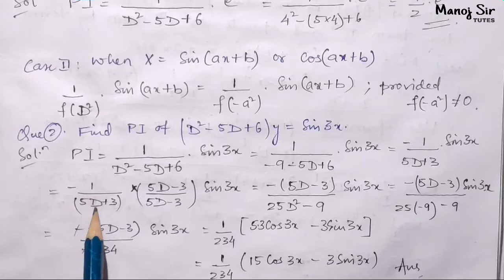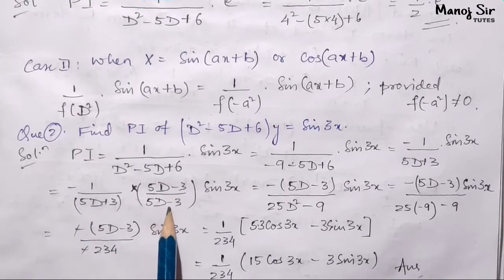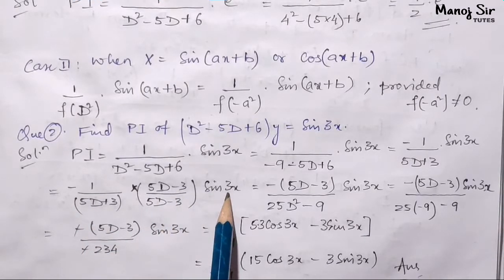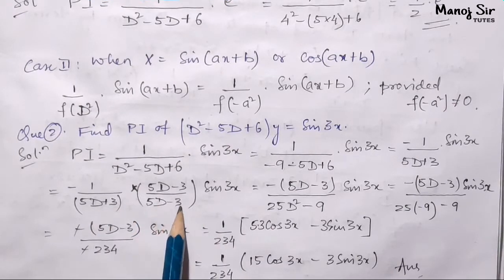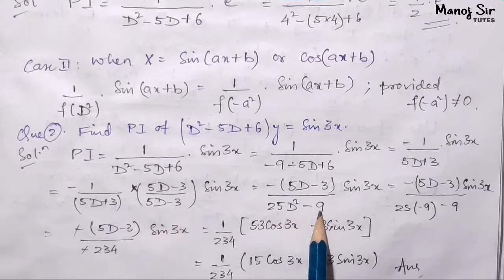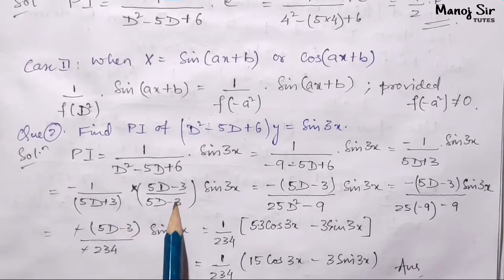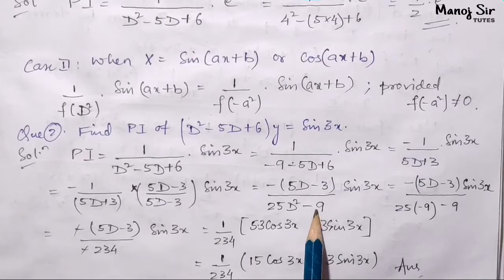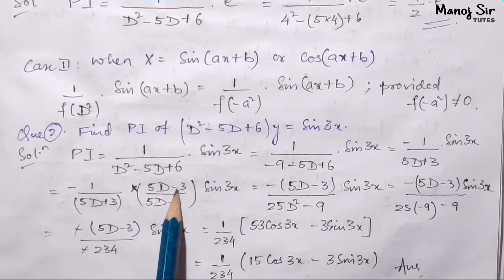Now rationalizing: minus of 1 upon 5D plus 3, multiplied by 5D minus 3 upon 5D minus 3, into sine of 3x. This is of the form (a+b)(a-b), which gives a squared minus b squared. So a squared is 25D squared, and b squared is 9. The numerator becomes minus of 5D minus 3, into sine 3x.